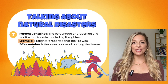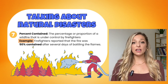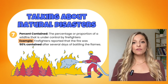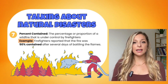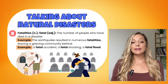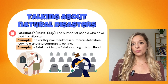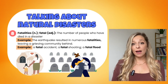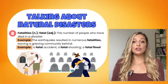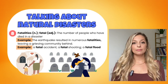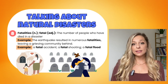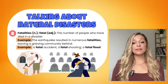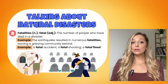Word number seven is the collocation percent contained. We use this when talking about wildfires, and it means the percentage or proportion of a wildfire that is under control by firefighters. For example: firefighters reported that the fire was 50% contained after several days of battling the flames. Word number eight is fatalities, or the adjective fatal. Fatal is a more advanced word for deadly, so fatalities refers to the number of people who have died in a disaster. For example: the earthquake resulted in numerous fatalities, leaving a grieving community behind. Common collocations include a fatal accident, a fatal shooting, or a fatal flood — meaning people died in these events.